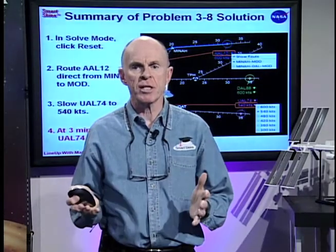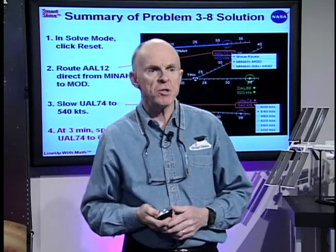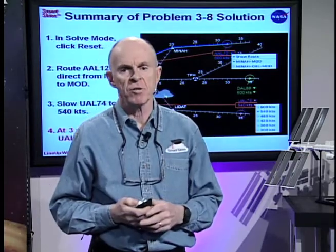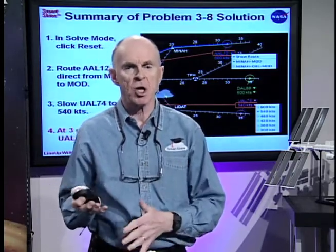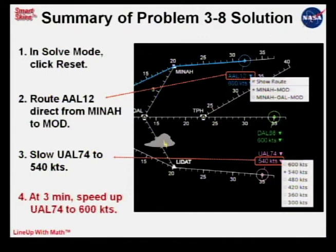We're going to demonstrate the solution we found using the simulator as an experimental tool. First, click reset in solve mode to get the problem back to the start. You'll need to route American Airlines direct from Minor to Modesto, bypassing Coaldale, and slow United 74 down to 540 knots. Do all that before running, then run the simulator. You can pause it at three minutes, change the speed to 600 knots to match Health Airlines, then run the problem to the end.